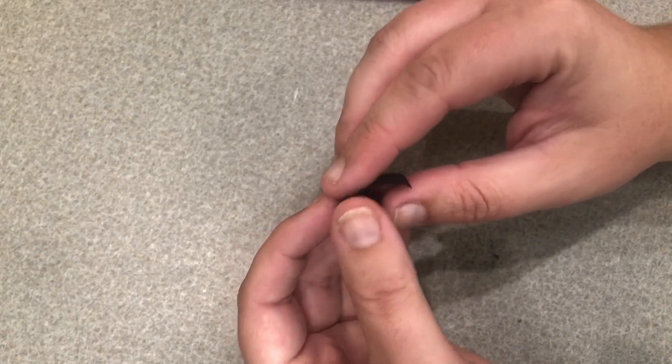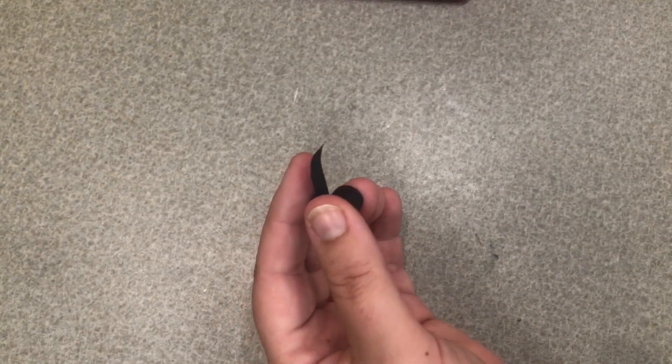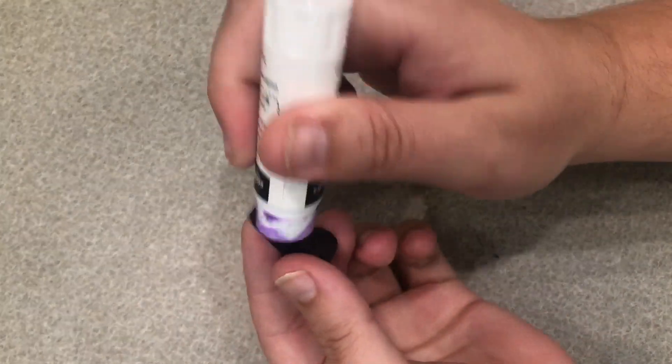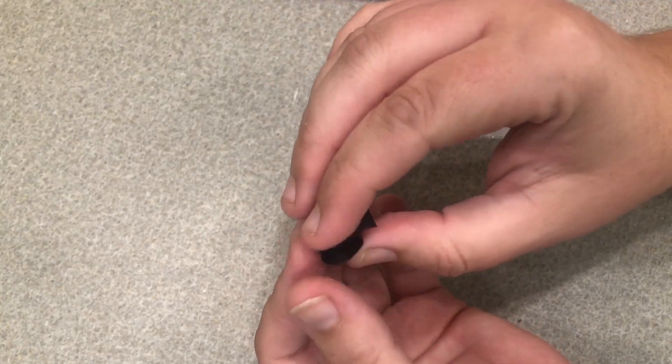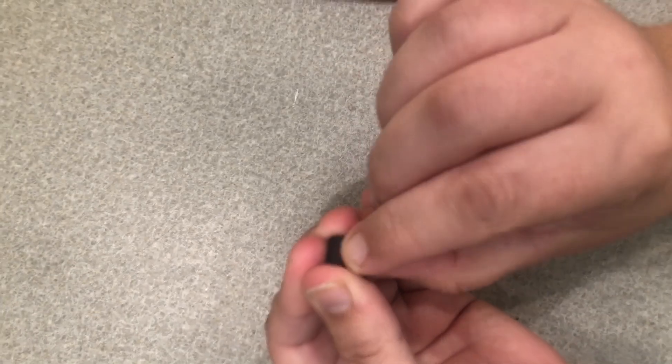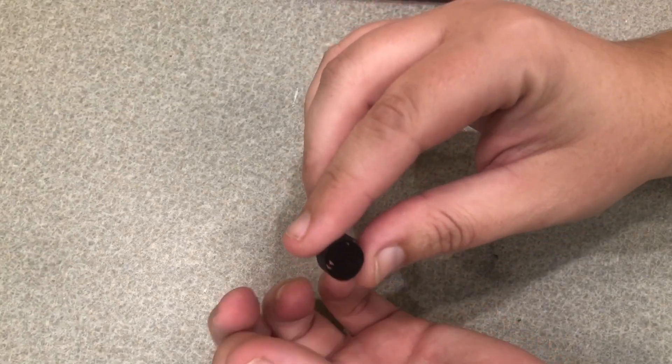Then we'll seal it up by taking some glue and adding some to the end of our strip and then pressing that against the rest of the rolled up strip so that it stays sealed.